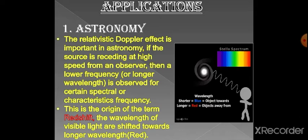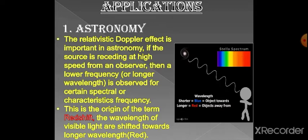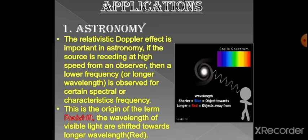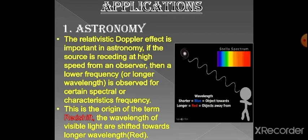So its frequency decreases and its wavelength increases. This is the origin of the term redshift. The wavelengths of visible light are shifted towards longer wavelengths, that is red.